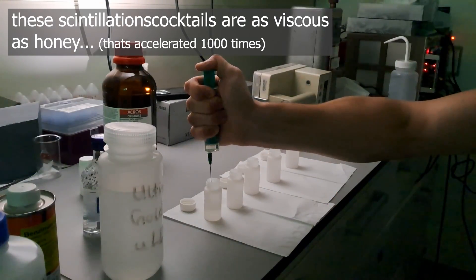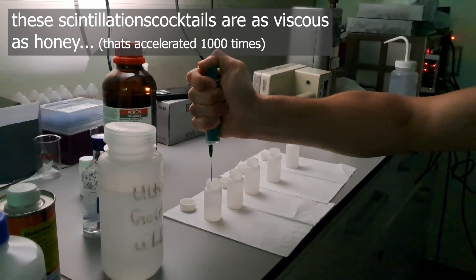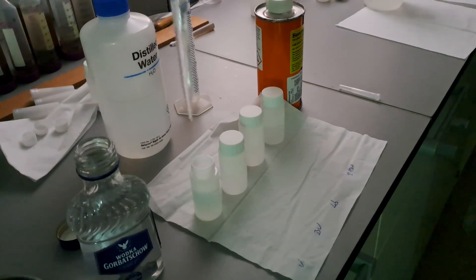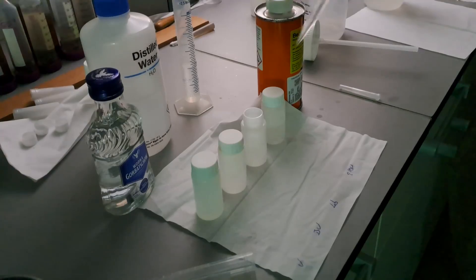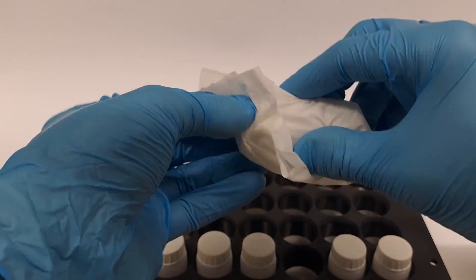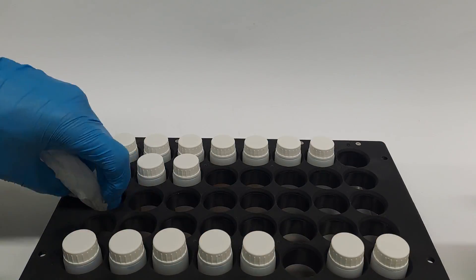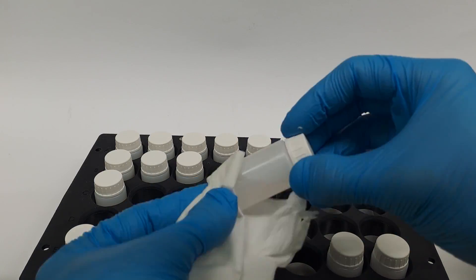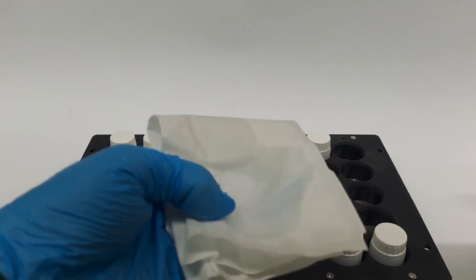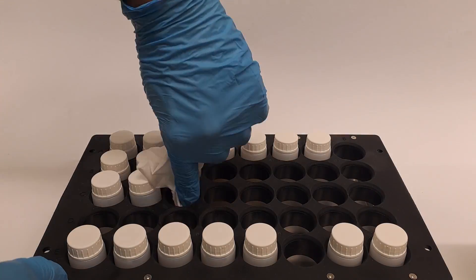In these vials, 12 ml of the ULLT scintillation cocktail were added. In addition to that, either 4 ml of vodka, 4 ml of water, 4 ml of laboratory ethanol previously diluted to 37.5%, or 4 ml of benzene. As an additional background measurement for benzene, another vial with 16 ml of just the scintillation cocktail was added.